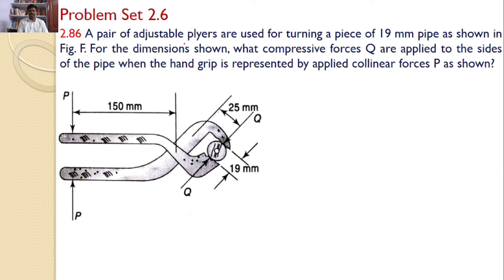A pair of adjustable pliers are used for turning a piece of 19 mm pipe as shown in the figure. For the dimensions shown, what compressive forces Q are applied to the sides of the pipe when the hand grip is represented by applied collinear forces P as shown in the figure?